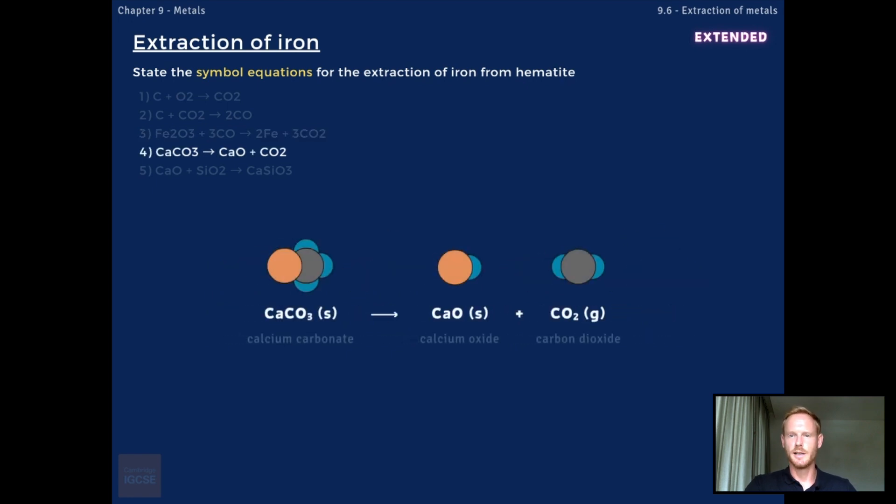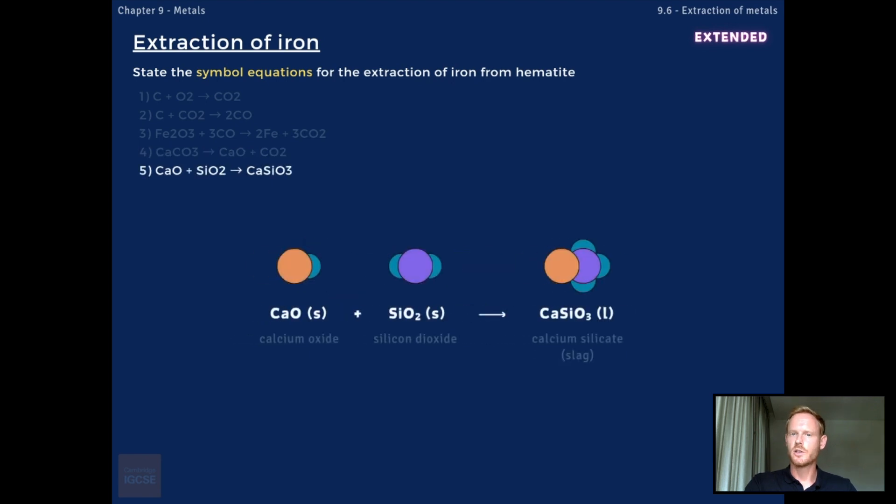The fourth stage is the thermal decomposition of calcium carbonate or limestone to produce calcium oxide. The equation for this reaction is CaCO3 forms CaO plus CO2. Finally, the calcium oxide reacts with impurities in the molten iron, mainly silicon dioxide, to form molten calcium silicate or slag. The symbol equation for this reaction is CaO plus SiO2 forms CaSiO3.